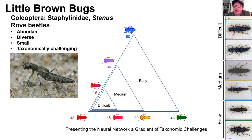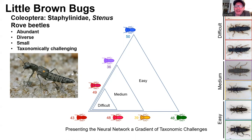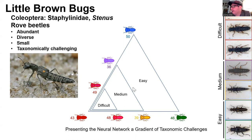The challenges presented to the machine learning algorithm can be visualized as three nested triangles. The smallest triangle represents three species that are challenging even to a human taxonomic specialist. The next two species are a bit more distinct — easy for a specialist but somewhat challenging for a non-specialist. And finally, we added two even more distinct species that really anyone could figure out. This gives us three discrete categories: difficult, medium, and easy. The numbers next to the beetles in the diagram represent the number of individuals for each species used in the various models and tests.